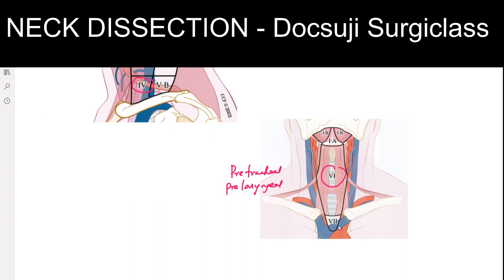Level 7 is the superior mediastinal lymph node. So in total, there are seven levels of lymph nodes in the neck.